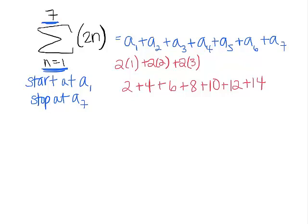So what I've done is I've generated the beginning part of this sequence. And I'm going to add them all together because that's the definition of evaluating a series. And I'm going to get 56.